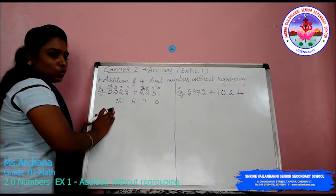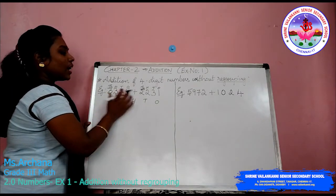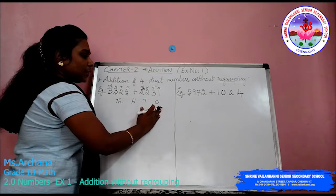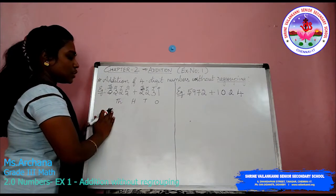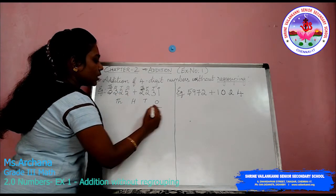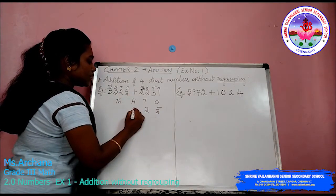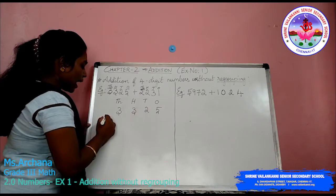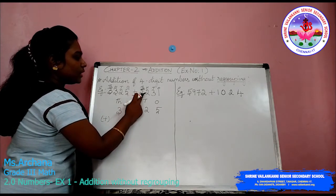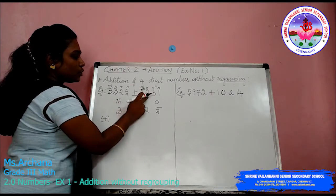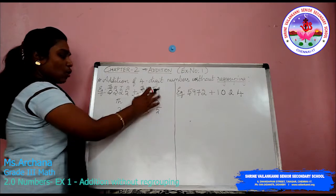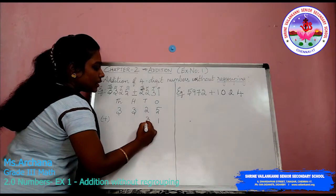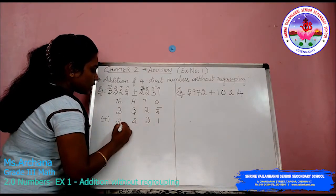After giving the place values, you will write the number according to the place values. Whenever you write the number, you are supposed to write from the right side to left side — that is from 1s place to 1000s place. So in 1s place you have 5, in 10s place 2, in 100s place 3, and in 1000s place 3. This 3325 has to be added with 2231. When you write the second number also, start from the 1s place: in 1s place 1, 10s place 3, 100s place 2, in 1000s place 2.